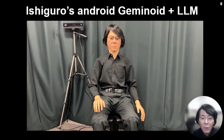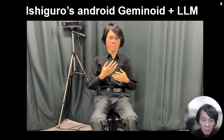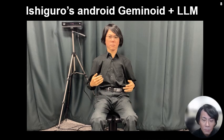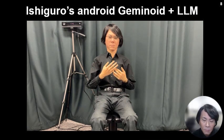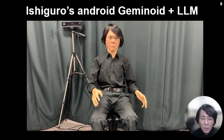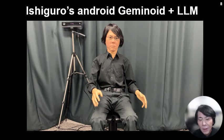This is one example of the application of a large language model for the Android. The Android responds: 'My research focuses on developing human-like robots that can think and work like humans. I am also interested in understanding what it means to be human through robotics.' We have input more than 10 books I have written and almost all media interviews, so this Android — my copy — can answer any kind of question instead of me.